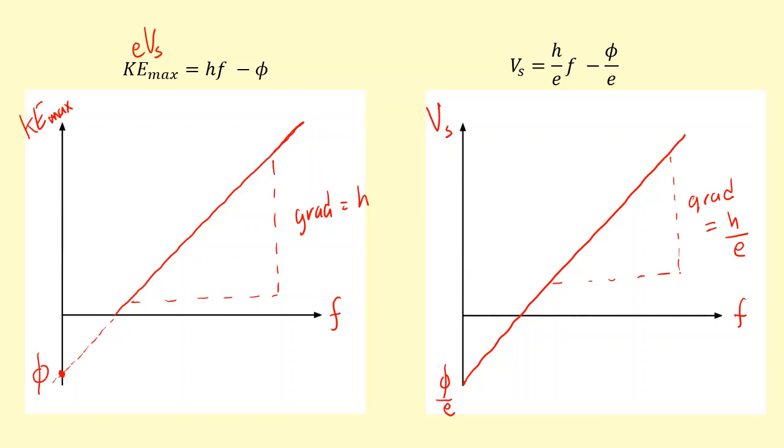You can also determine the x-intercept here. In this case, the x-intercept, if you make KE max equal to zero, you get hf equals phi. If you rearrange that, you get f is equal to the work function over Planck's constant. So this will equal the work function over Planck's constant.